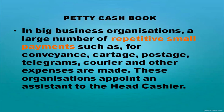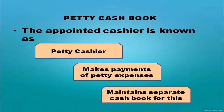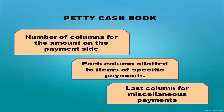Coming to petty cash book: in big business organizations, a large number of repetitive small payments such as conveyance, cartage, postage, telegrams, courier, and other expenses are made. These organizations appoint an assistant to the head cashier known as a petty cashier, who makes payments of petty expenses. The petty cashier maintains a separate cash book for this. In the petty cash book, there are a number of columns for amounts on the payment side — each column allotted to specific items like postage, conveyance, refreshment, etc., with a last column for miscellaneous payments.